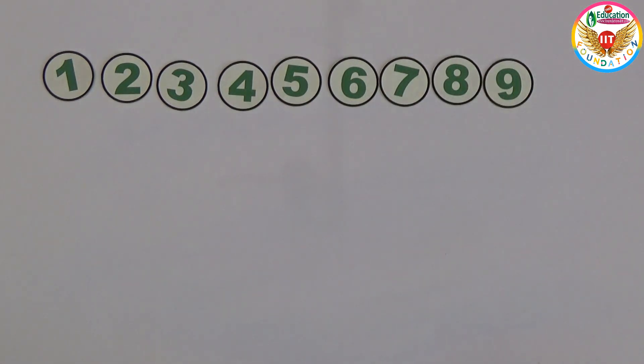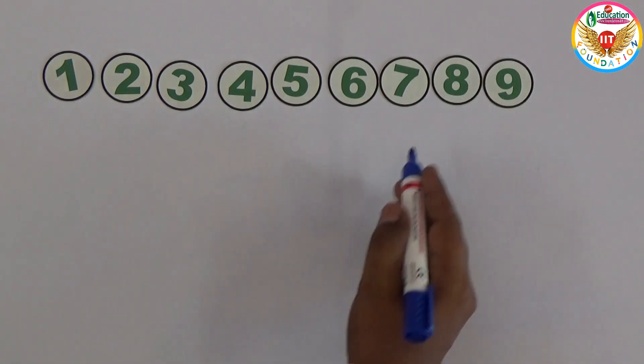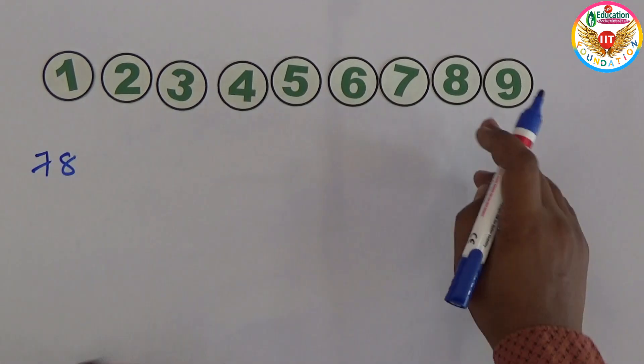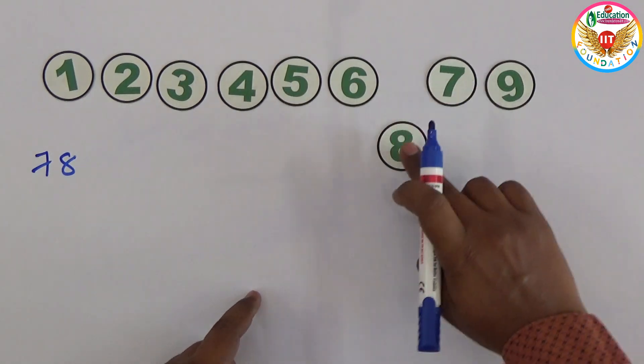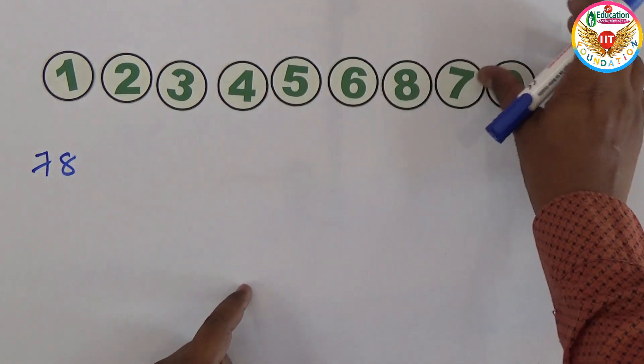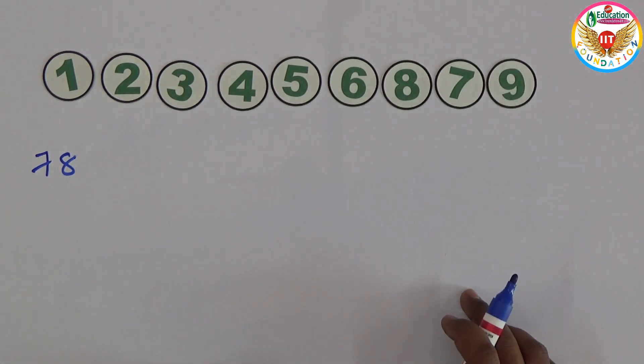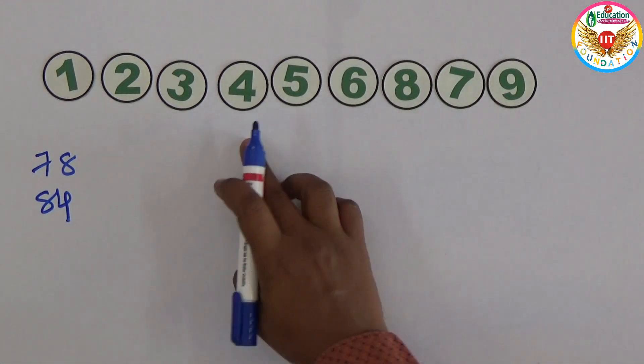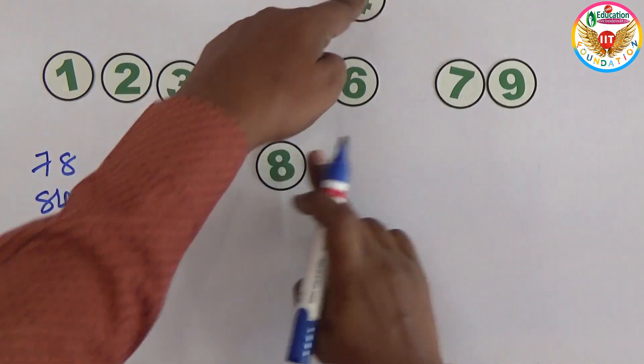Let me do some moves. For example, 7 and 8 I am interchanging. In the place of 7 is 8, and 8's place is 7. That is one move. And 8 and 4, just interchange.